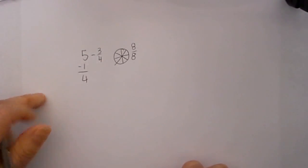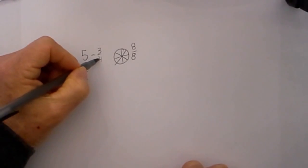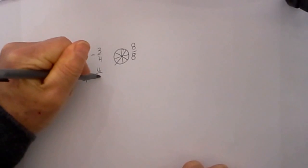So we will rewrite the 1 by putting the denominator over itself, so the 1 will become 4 over 4.